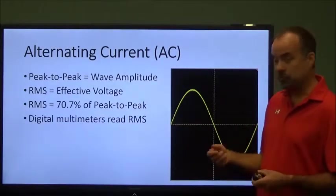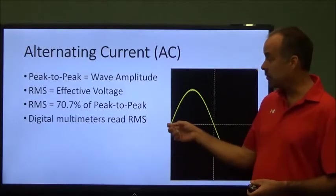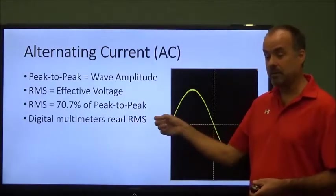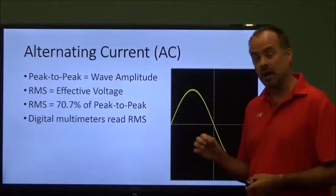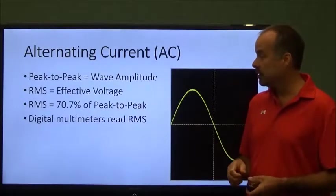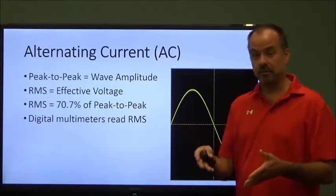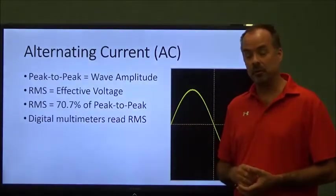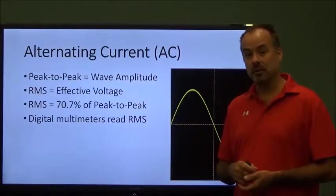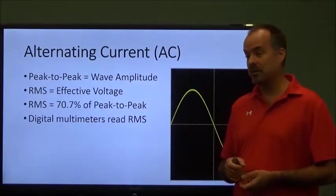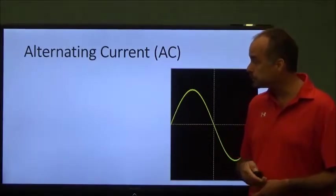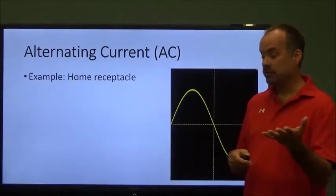When you're using a digital multimeter, your digital multimeter is displaying the RMS voltage, not displaying the peak-to-peak voltage. When you test the outlet or AC signal, like in the power supplies on our trainers in the lab, you're actually measuring the RMS voltage and not the peak-to-peak voltage.